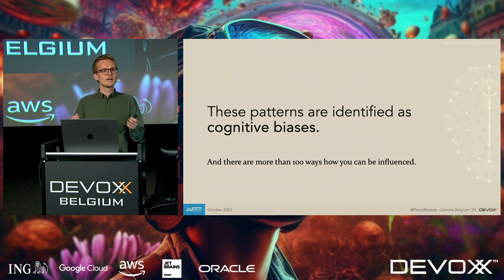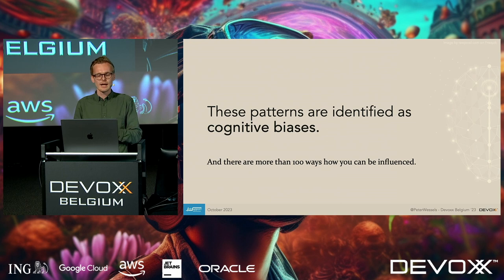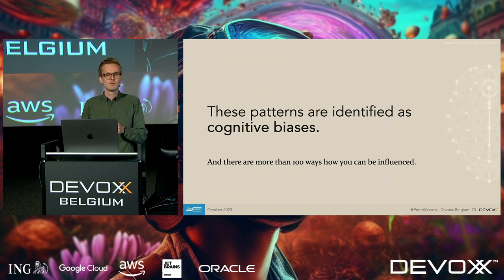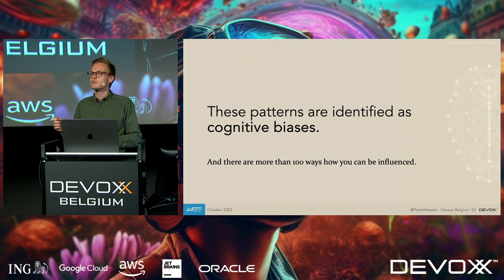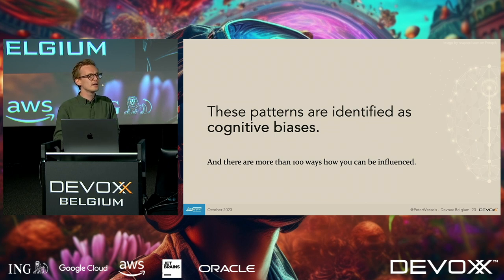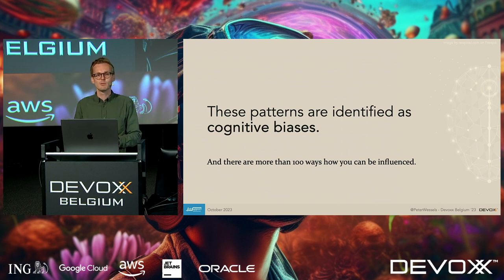These kinds of patterns that influence the way we think during software creation are identified as cognitive biases. When we make software, we are influenced in numerous ways. There are plenty of occasions where your brain prevents you from basing your judgment purely on rational arguments. Luckily, there is research into common patterns, and we're going to dive into some today.